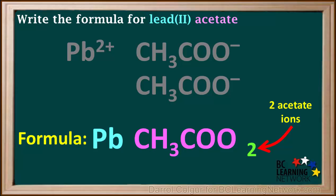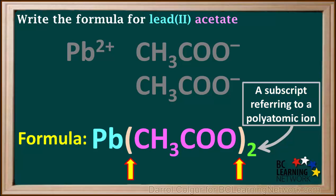The subscript 2 here means there are two acetate ions in the formula. Whenever a subscript refers to a polyatomic ion and is written to the right of it, brackets must be written around the polyatomic ion in the formula.